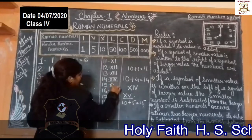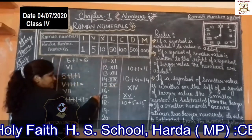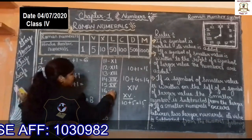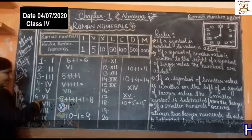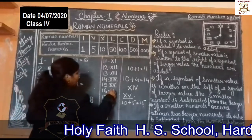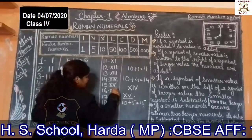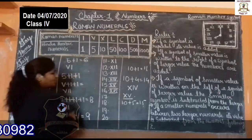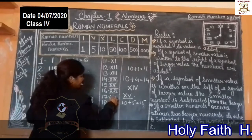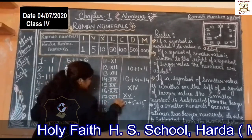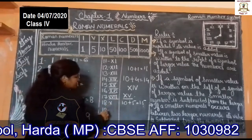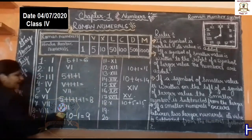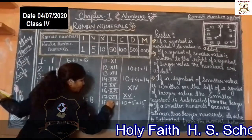16: 10 plus 6 is 16. The symbol of 6 is already given — VI. So we write XVI. 17: 10 plus 7. 18: 10 plus 8. We already learned the symbol for 8, so this is the symbol of 18: XVIII.